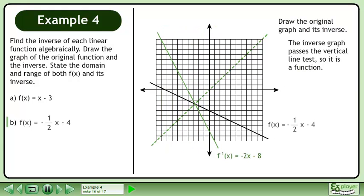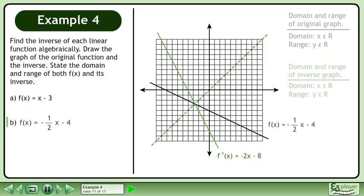The domain of the original graph is x belongs to the set of real numbers, and the range is y belongs to the set of real numbers. The domain and range of the inverse is found by swapping the original domain and range.